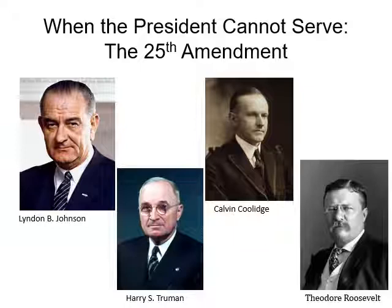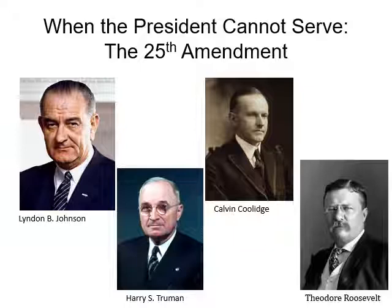The 25th Amendment defines what happens when the President cannot continue to serve in office. Section 1 says in the case of the removal of the President from office, or of his death or resignation, the Vice President shall become President. Whenever there is a vacancy in the office of the Vice President, the President shall nominate a Vice President who shall take office upon confirmation by a majority vote of both Houses of Congress. Section 3 provides a mechanism for removing the President whenever he or she is physically or mentally unable to continue in the job — such powers and duties shall be discharged by the Vice President as Acting President.